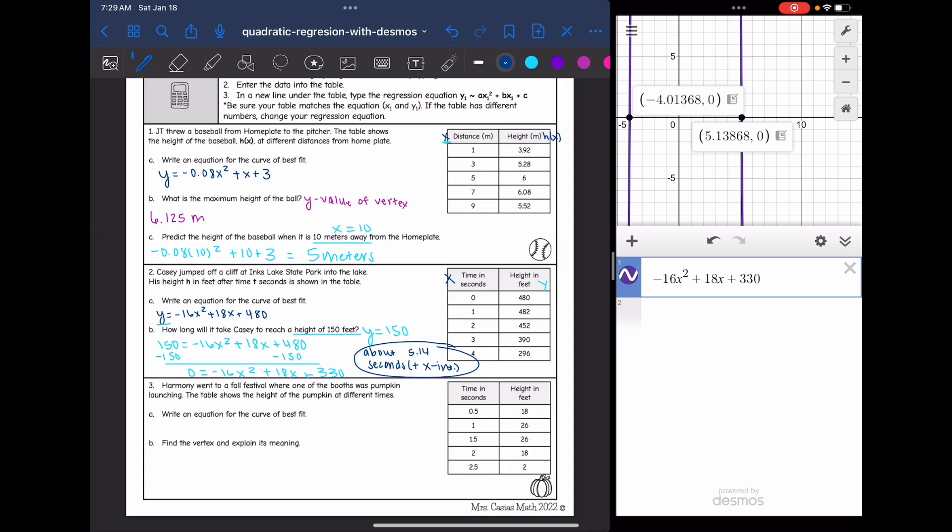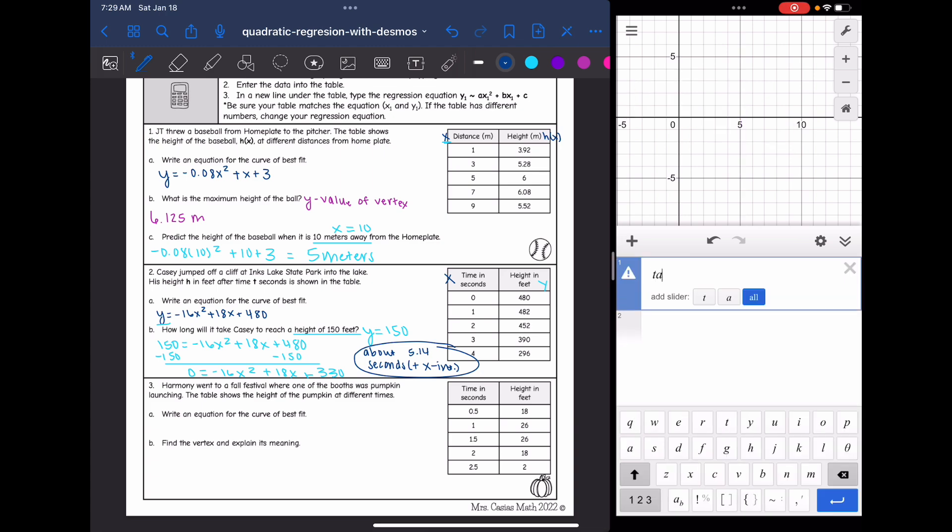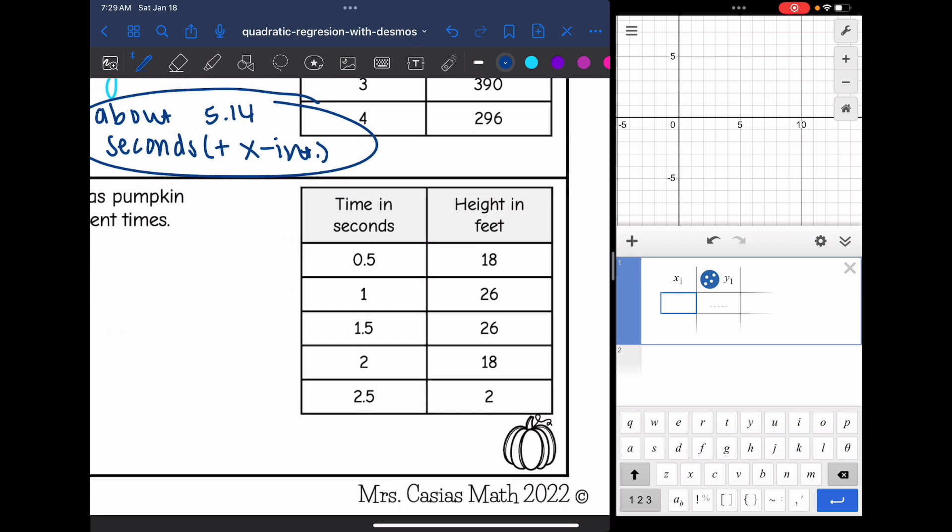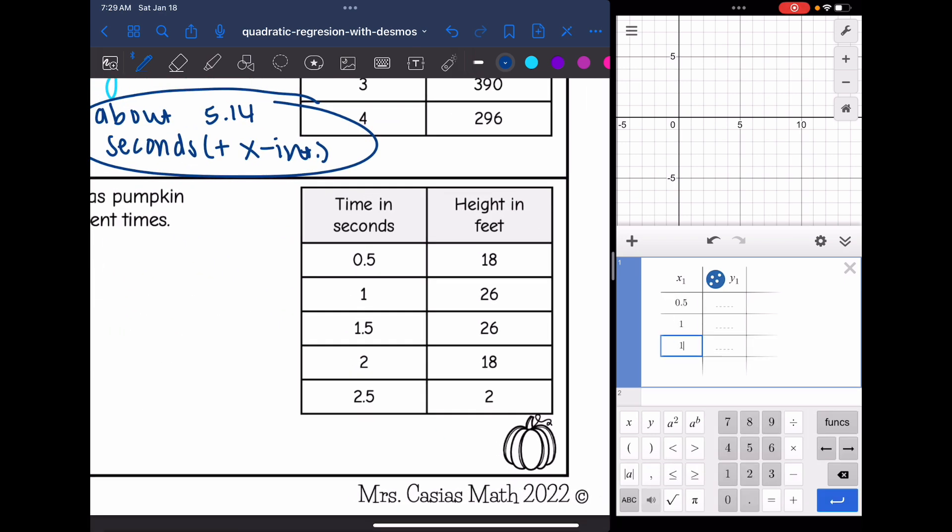Okay, let's look at our last one. It says Harmony went to a fall festival where one of the booths was a pumpkin launching booth. The table shows the height of the pumpkin at different times. Write the equation for the curve of best fit. So I need to input this data into Desmos. Okay, I'm going to double check it really quick. Looks good.